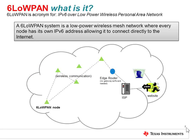So what is 6LowPAN? 6LowPAN stands for IPv6 over low-power wireless personal area network. The principal idea with the 6LowPAN standard is that Internet protocol packets can be carried efficiently within small link layer frames. This means that 6LowPAN should be used with low-power wireless networks with memory-constrained embedded devices.